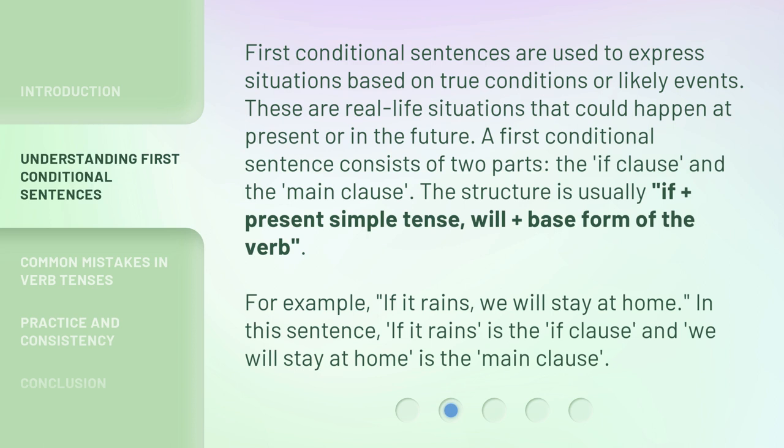The structure is usually: if plus present simple tense, will plus base form of the verb. For example, 'if it rains, we will stay at home.' In this sentence, 'if it rains' is the if clause and 'we will stay at home' is the main clause.